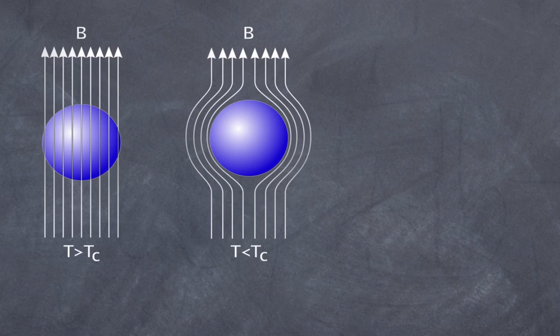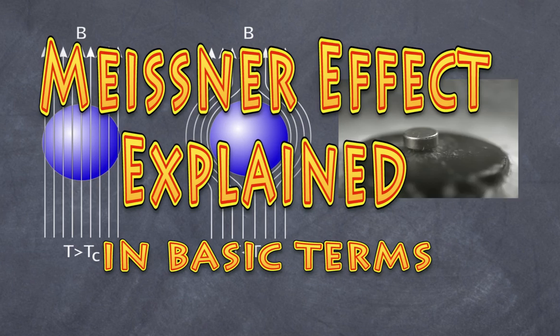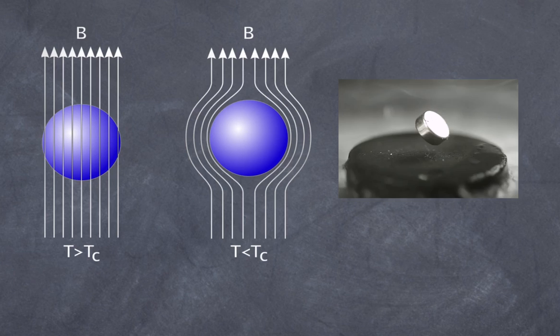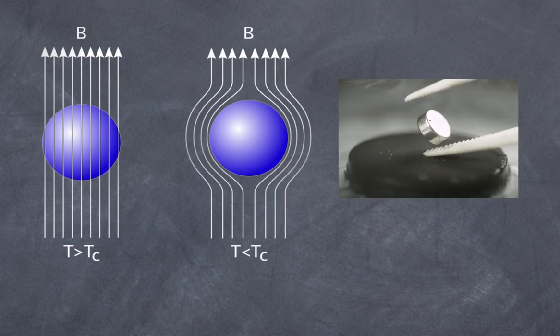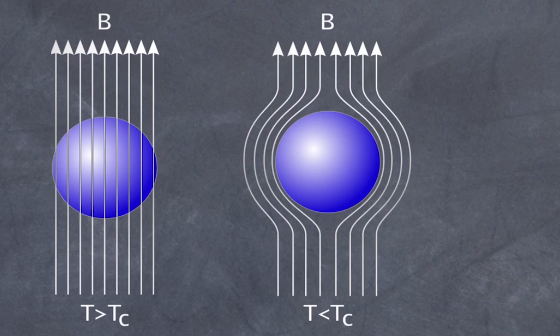Welcome to High School Physics Explained. Today I'd like to talk briefly about a simple explanation as to why a magnet levitates on top of a superconductor — commonly referred to as the Meissner effect. As demonstrated in my previous video, the superconducting material expels all the magnetic field lines that are trying to penetrate it. The diagram on the left shows a material that allows magnetic field lines to penetrate it, but if that material is superconducting and drops below its critical temperature, the field lines are expelled — that is the Meissner effect.